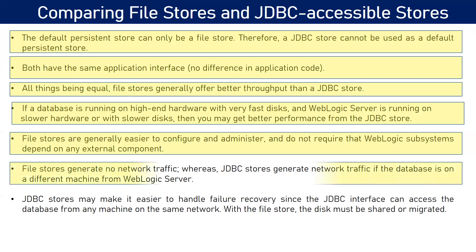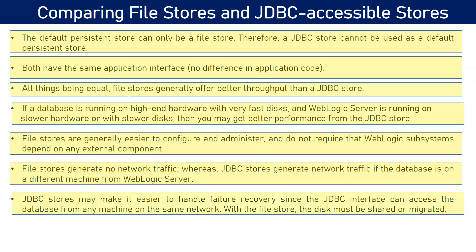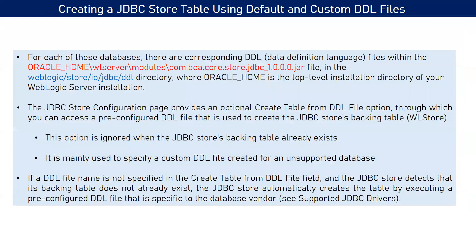File stores generate no network traffic because the hard disk is attached to the operating system. JDBC-based persistent stores require connecting to an external database, introducing network traffic. If the network breaks, you will have problems with your JMS services. JDBC stores may be easier to handle failure recovery — if a managed server crashes, you can point another managed server to the same database. With a file-based store, you would need to perform a server migration.